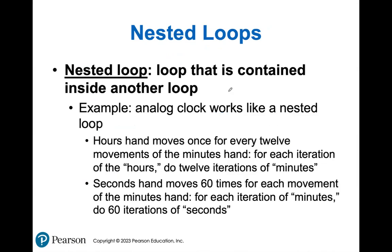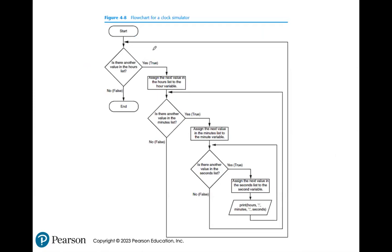Nested loops - a loop inside of a loop. Think of a clock: we have 12 hours, 60 minutes, and 60 seconds. Each hour consists of 60 minutes and each minute consists of 60 seconds - just think of all those arms moving on a clock. Here's how that looks in a flowchart. You can count how many loops are inside a flowchart by counting how many arrows return to in front of decision structures. In this case it's three - two loops nested within one loop.